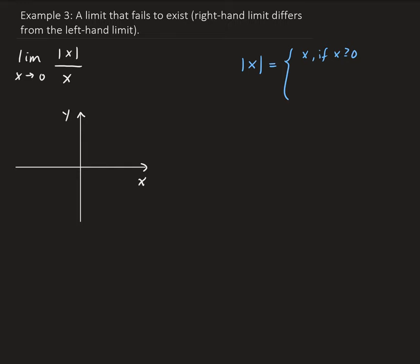If x is negative, then we take the negative of that value. As a simple example, the absolute value of 2 is going to be 2 since 2 is strictly bigger than 0. And if we take the absolute value of negative 2, that is just the negative of negative 2, so we get 2.